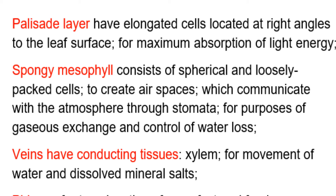The next point is on veins: they have conducting tissues — that is xylem — for movement of water and dissolved mineral salts. We also have the spongy mesophyll, which consists of spherical and loosely packed cells to create air spaces communicating with the atmosphere through stomata for gaseous exchange and control of water loss.